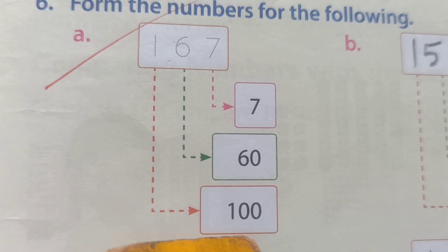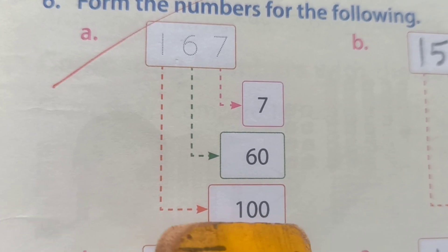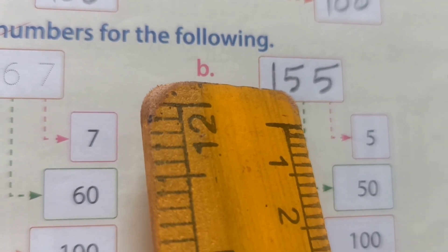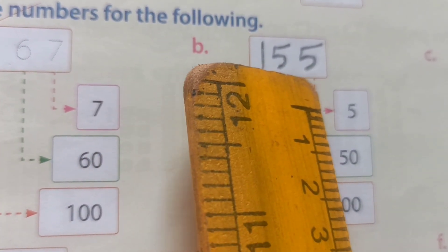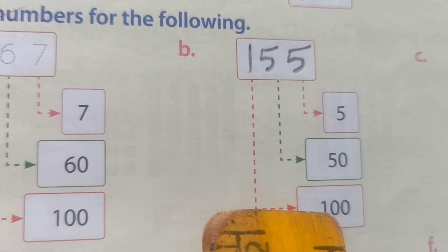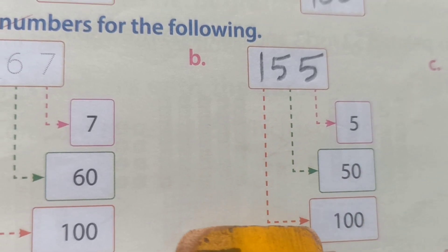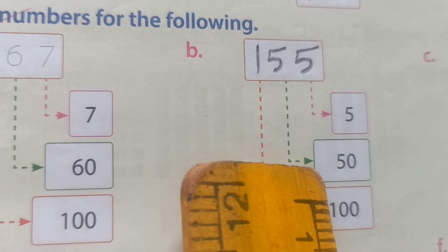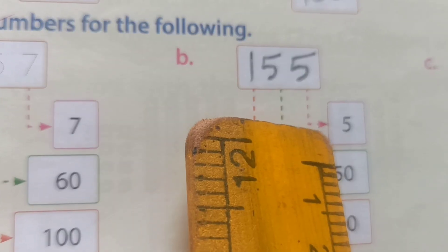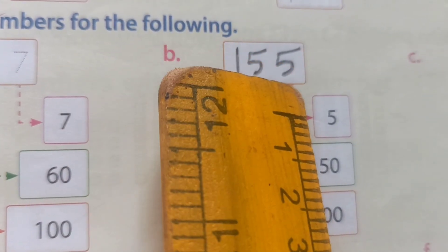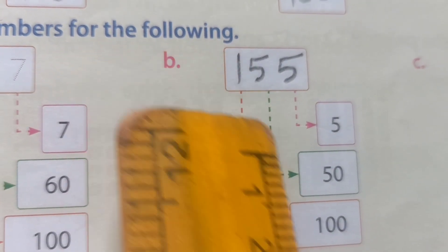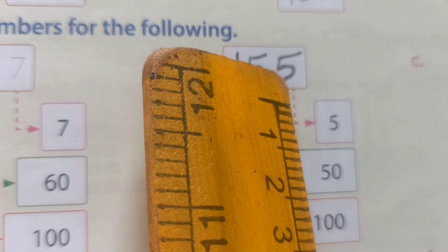B number: you can see 5 ones, 50, and 100. Then how we write the number? 100, 50, 5 — means 155.